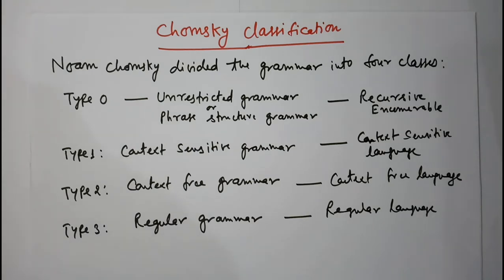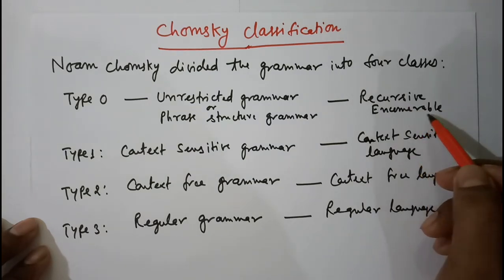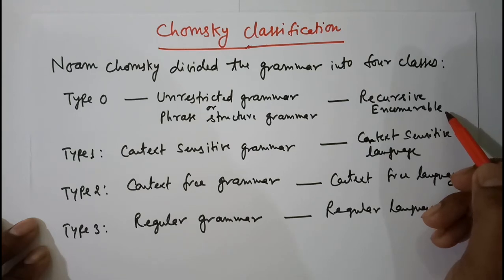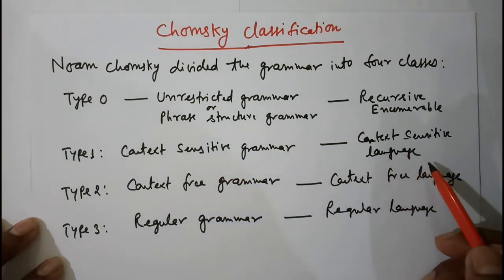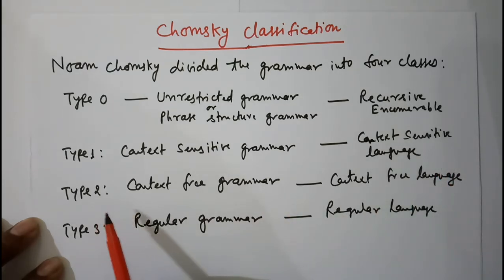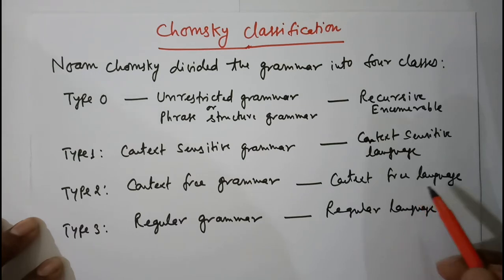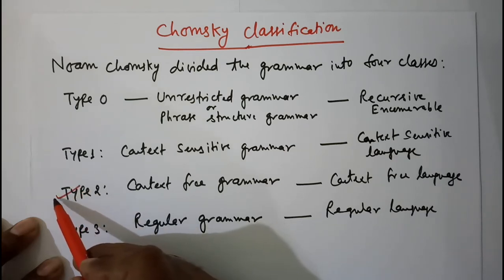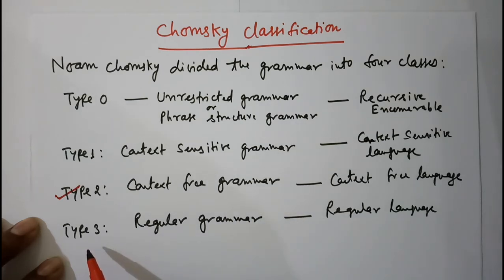What are the languages produced by these grammars? For Type 0 grammar, the language produced is called Recursive Enumerable languages, or RE. The language produced by Type 1 grammar is called context-sensitive language. The language produced by Type 2 grammar is called context-free language, and most programming languages are of Type 2, so context-free grammar is very important for us. For Type 3, the language produced by regular grammar is called regular language.